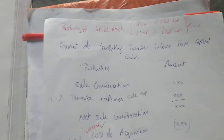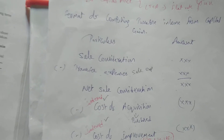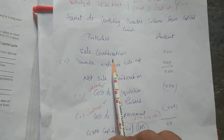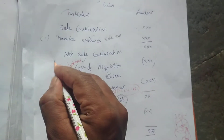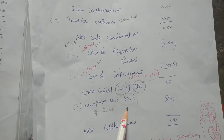Good morning students, let us start today's class. Today we'll do some problems — first easy ones, then tough ones. In the previous class we saw the capital gain format: sale consideration minus sale expenses gives net consideration; then index cost of acquisition and index cost of improvement for long-term capital assets; then gross capital gain minus exemption under Section 54 gives net capital gain.